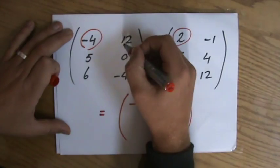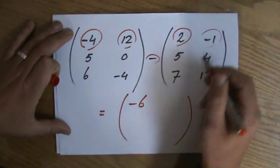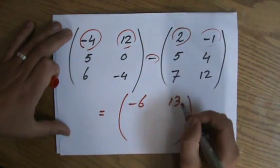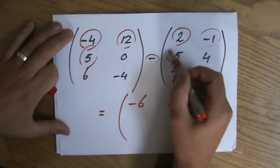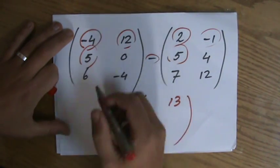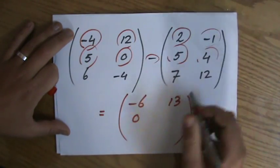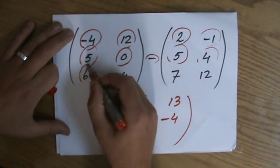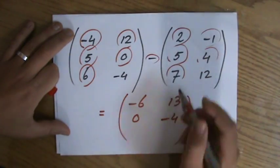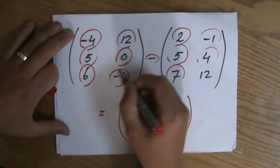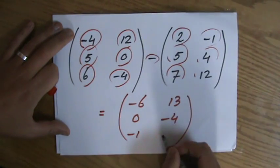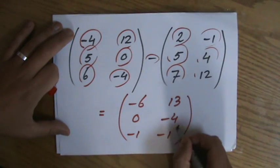Minus 4 minus 2 is minus 6, 12 minus minus 1 is 13, 5 minus 5 is 0, 0 minus 4 is minus 4. Everybody can do this: 6 minus 7 is minus 1, and minus 4 minus 12 is minus 16.